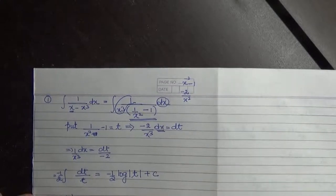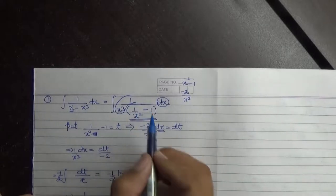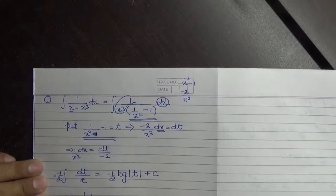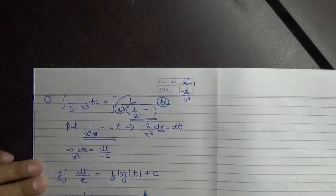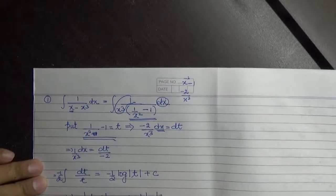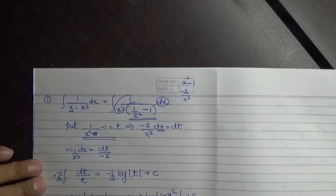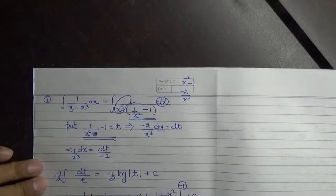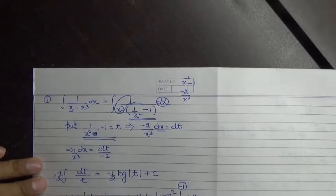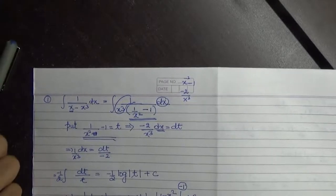t की value replace करने पर: (-1/2) log|1/x² - 1| + c। इसको और simplify करें: (-1/2) log|(1 - x²)/x²| + c। अगर यहाँ से minus को भी खतम करना चाहते हैं, तो minus को power में लिख सकते हैं, जिससे term reciprocal हो जाएगी। so this is equal to (1/2) log|x²/(1 - x²)| + c। यह आपका integration होगा।